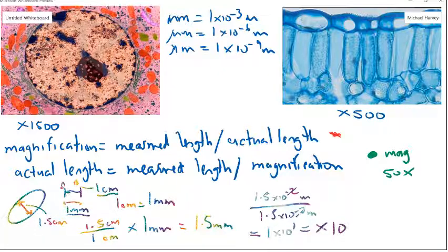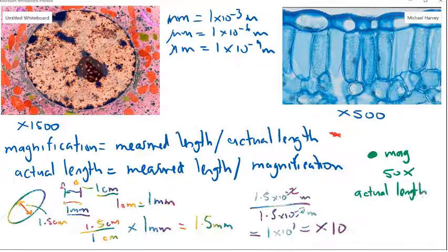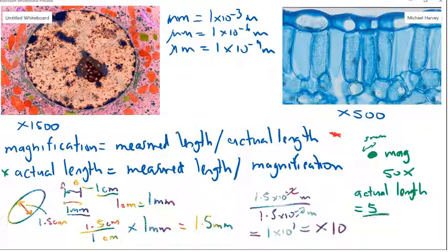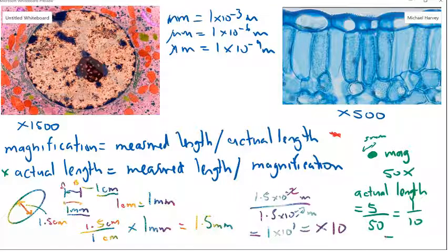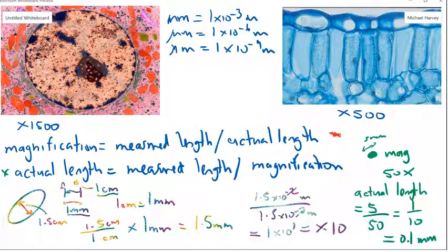The actual length is going to be equal to, looking at this equation here, the measured length—say we have that as being five millimeters—divided by the magnification, which equals one over ten. If we do some jiggery-pokery, it's 0.1 millimeters. So that is in a nutshell how you do these calculations.